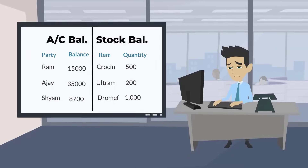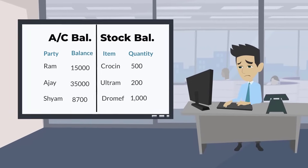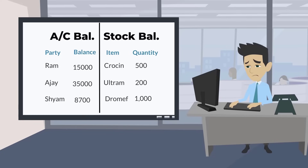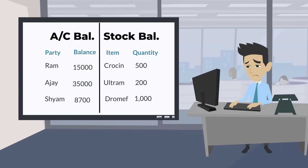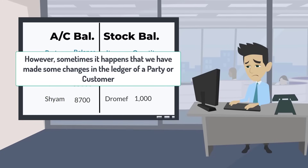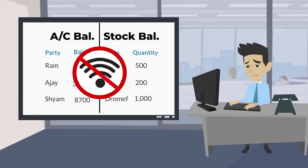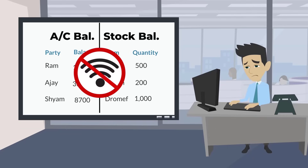Usually, the software displays account and stock balances along with their entries. But sometimes it happens that if we have made some changes in the ledger or stock status of a party or customer, those changes may not get updated in their ledger or stock status due to technical issues or internet connectivity.